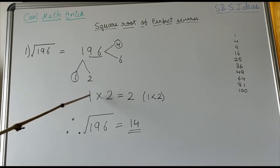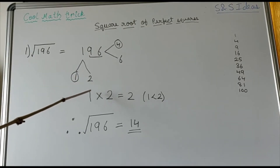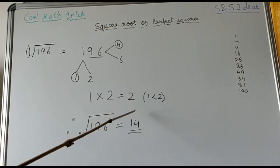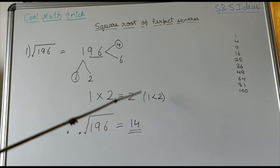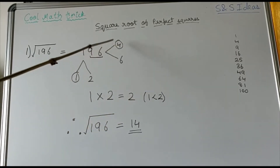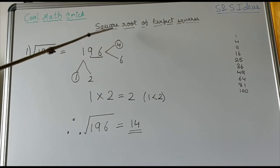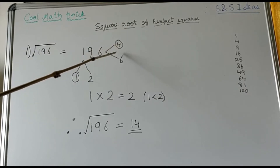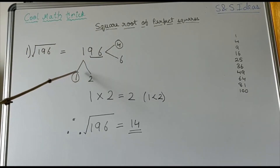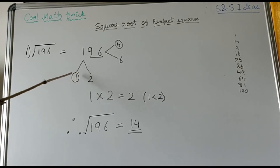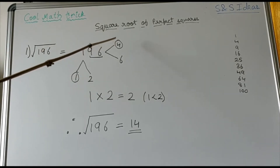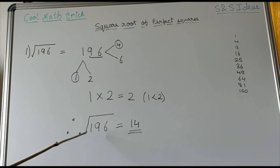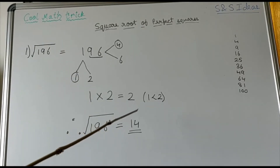Now we have to multiply these two numbers together. 1 times 2 is equal to 2. As we can observe, 1 is less than 2. Therefore we choose the lesser number between the two unit digit possibilities, which is 4, and by default we take the lesser number for the tens place, which is 1. So this is our tens place and this is our units place of the square root. Therefore, the square root of 196 is equal to 14.